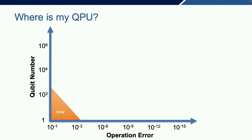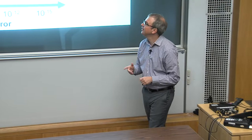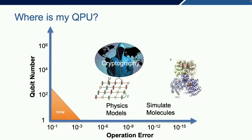We've got this quantum processing unit—what are we going to do with it? I have some goals. Originally I was going to break cryptography to steal all the money out of the bank, but I've changed my mind—I'm going to break cryptography so my students will quit talking about blockchain. Physics models are interesting. Physicists are often interested in universal behavior, so sometimes precision isn't so necessary. And then I'm really interested in simulating molecules, because of my background in chemistry.